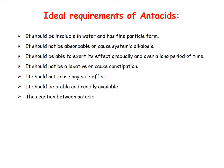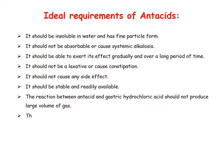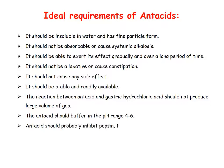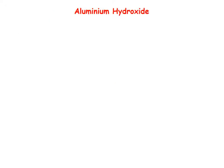The reaction between antacid and gastric acid should not produce a large volume of gas. The antacid should buffer in pH range 4 to 6 and should preferably inhibit pepsin and proteolytic enzymes.